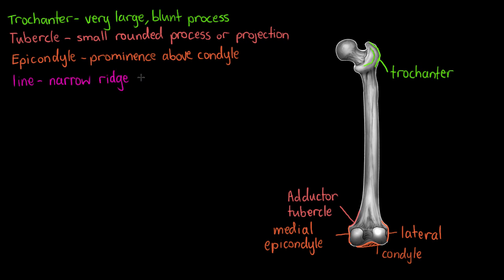The last bone marking we are looking at is called a line — a relatively narrow ridge of bone that is not quite as prominent as the crest discussed earlier. We can see a line forming along the trochanter, and that will be called the intertrochanteric line. This covers all the bone markings for muscle and ligament attachment points. In the next video we will look at the markings that help to form joints. I hope this has been helpful, and as always, thanks for watching.